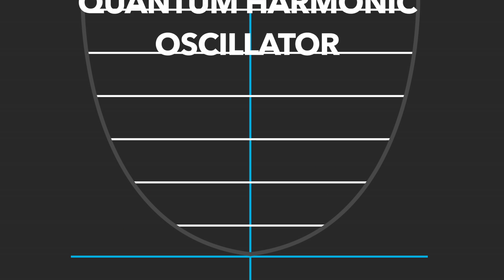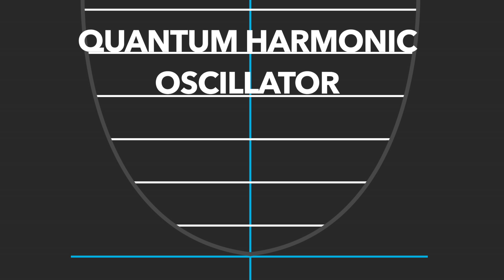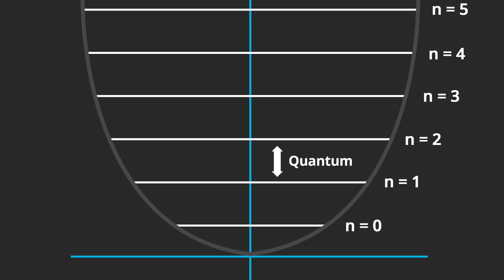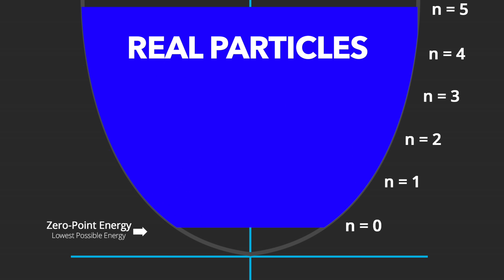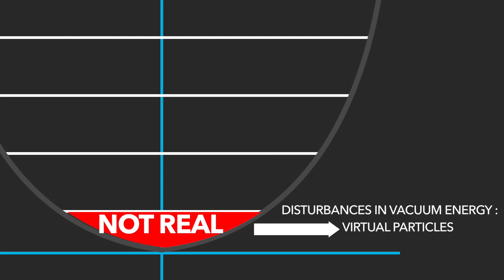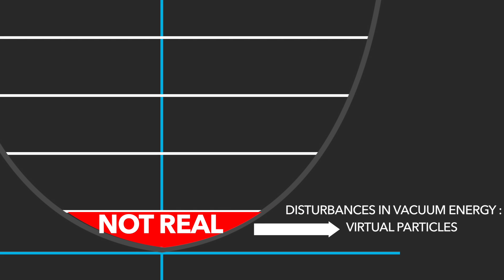Let's have a look at the graph of the quantum harmonic oscillator. It's actually quite simple — it's just a graph that shows us many energy levels in which every N adds an extremely small amount of energy called the quantum. The most important thing about this graph is that it shows us the zero point energy, the lowest possible energy in a quantum system. From this point upward on the graph exist real particles, and no real particle can exist below the zero point.